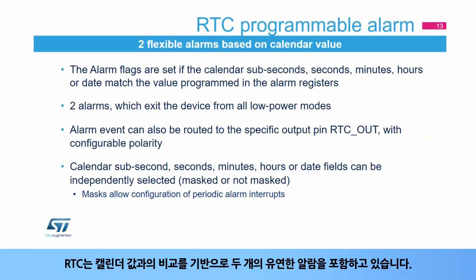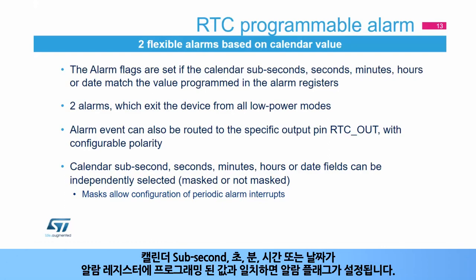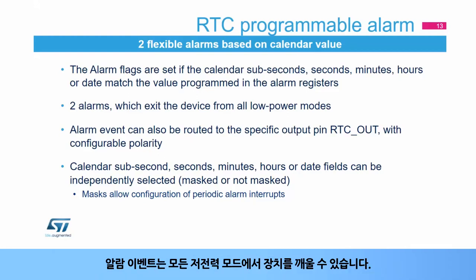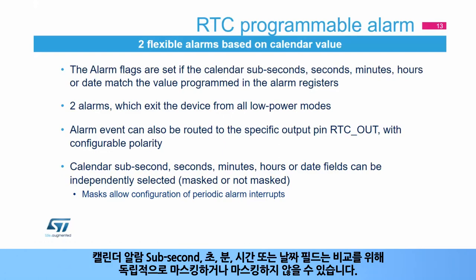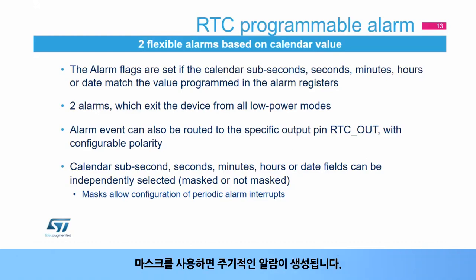The RTC embeds two flexible alarms based on comparison with the calendar value. The alarm flags are set if the calendar sub-seconds, seconds, minutes, hours, or date match the value programmed in the alarm registers. The alarm events can wake up the device from all low-power modes and can also be routed to the RTC OUT output pin with configurable polarity. The calendar alarm sub-second, seconds, minutes, hours, or date fields can be independently masked for the comparison. When masks are used, periodic alarms are generated.